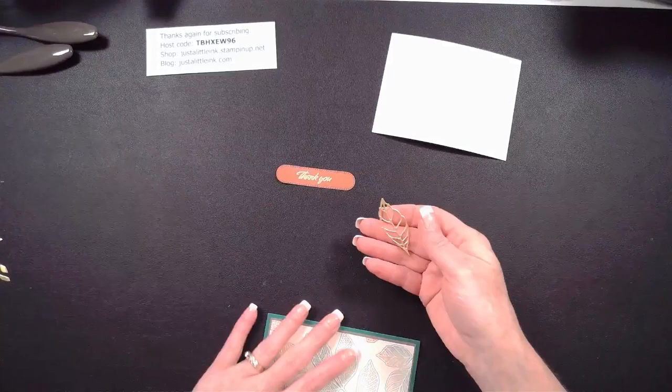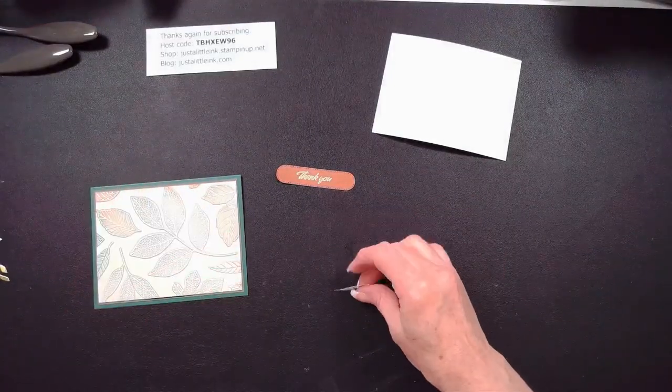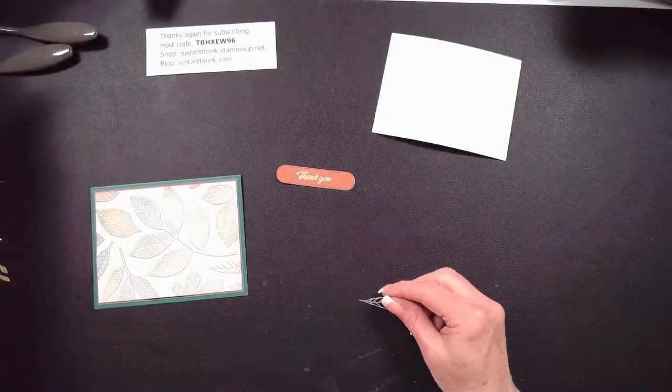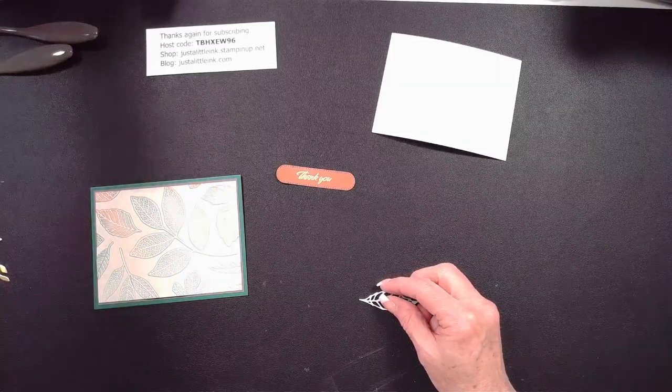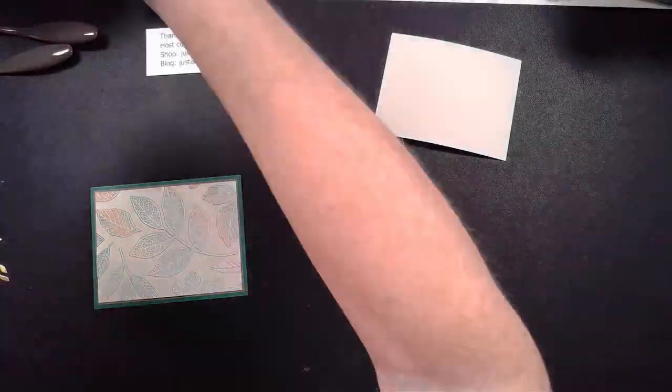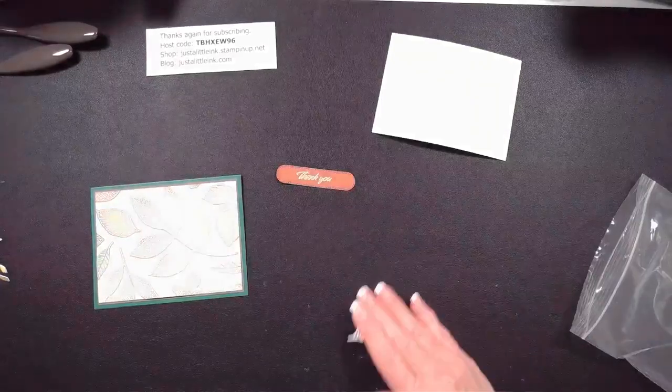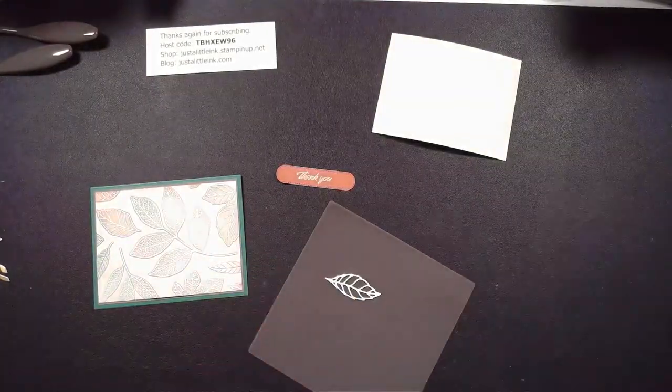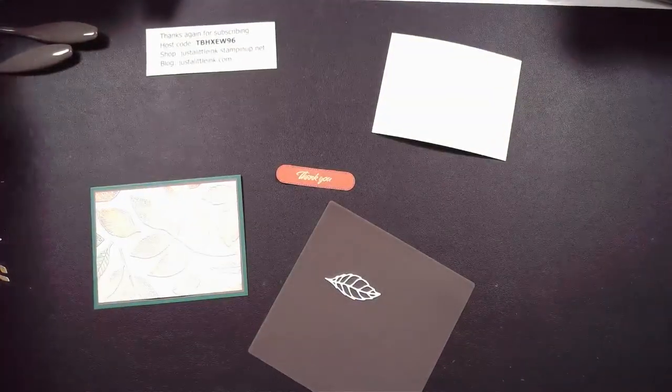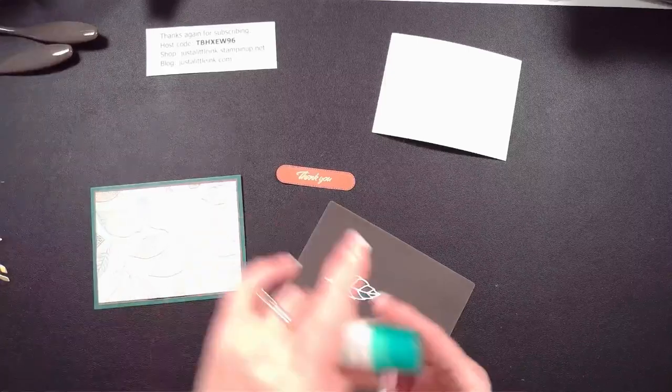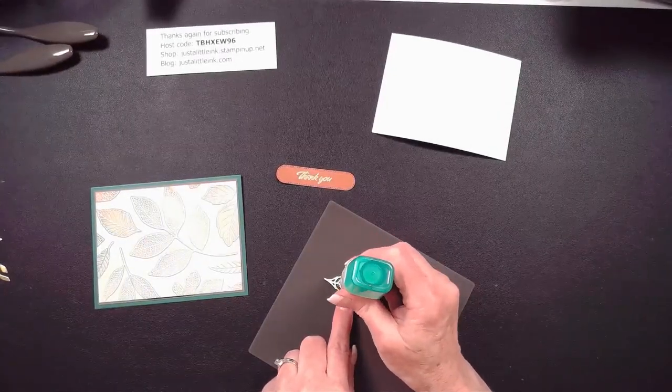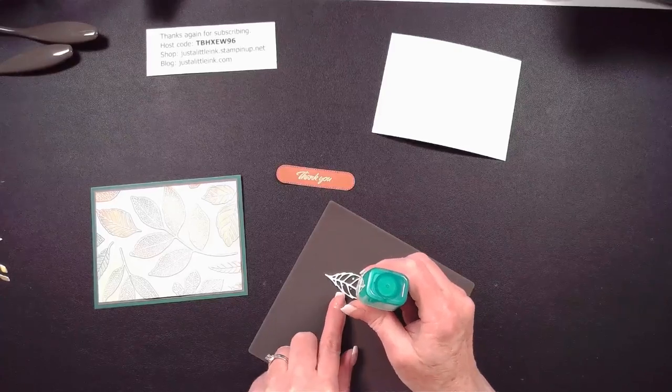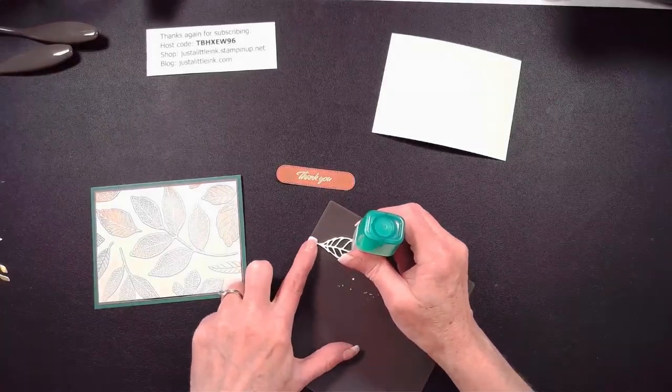And then I'm going to grab my scrap paper. Well, actually no, you know what I've got? I've got my Silicone Craft Sheet, which is a better option when I'm going to put glue on the back side of this. So I'm going to grab my Liquid Glue. And if I goober over, it's not going to be a big deal because I can clean up this mat.